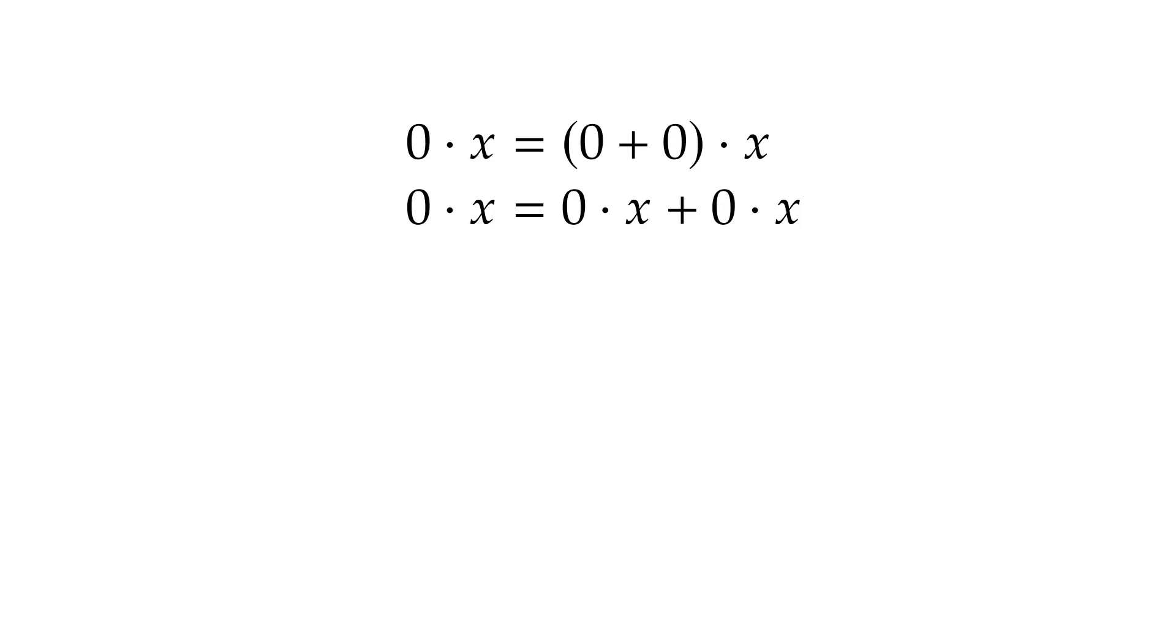At this point in the proof, we don't know that 0 times x equals 0, but we know that it's some number, and we know that number has a negative. So let's add that negative to both sides of the equation. Then, group with parens. And since the number plus its negative is 0, we get 0 equals 0 plus 0 times x.